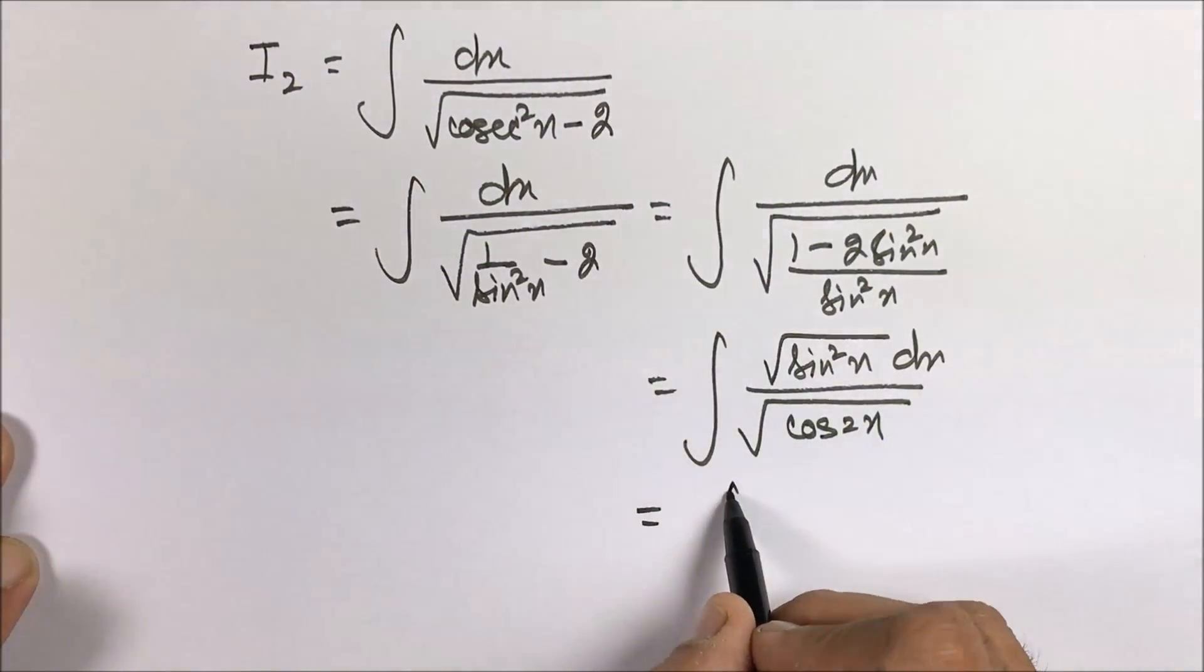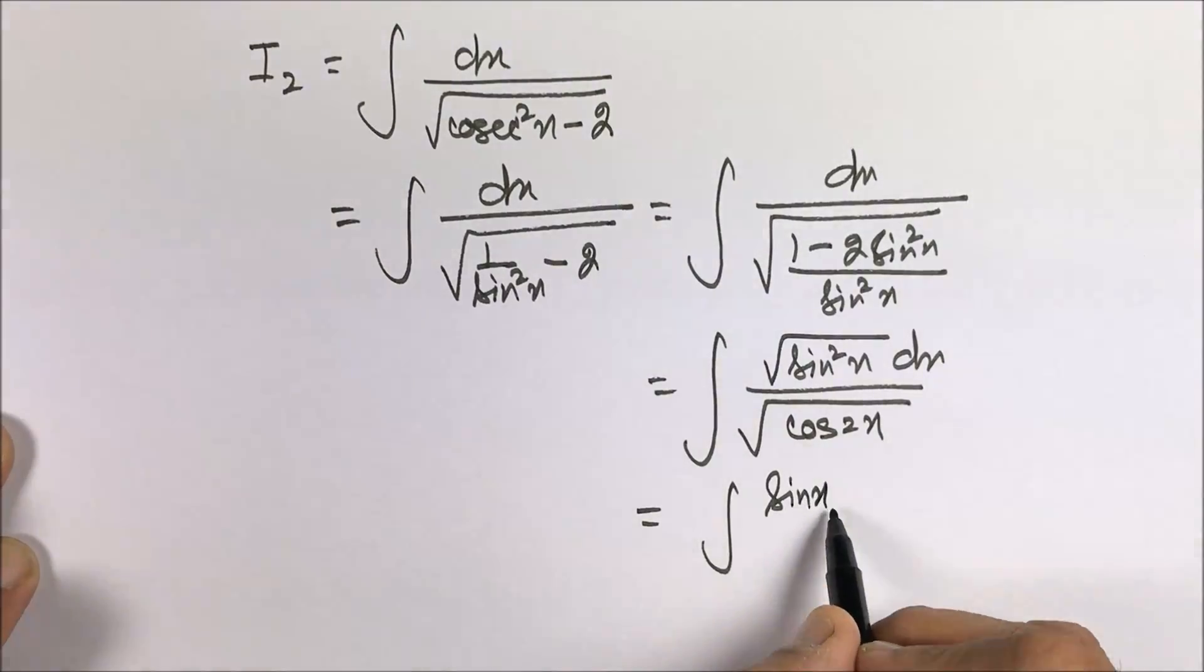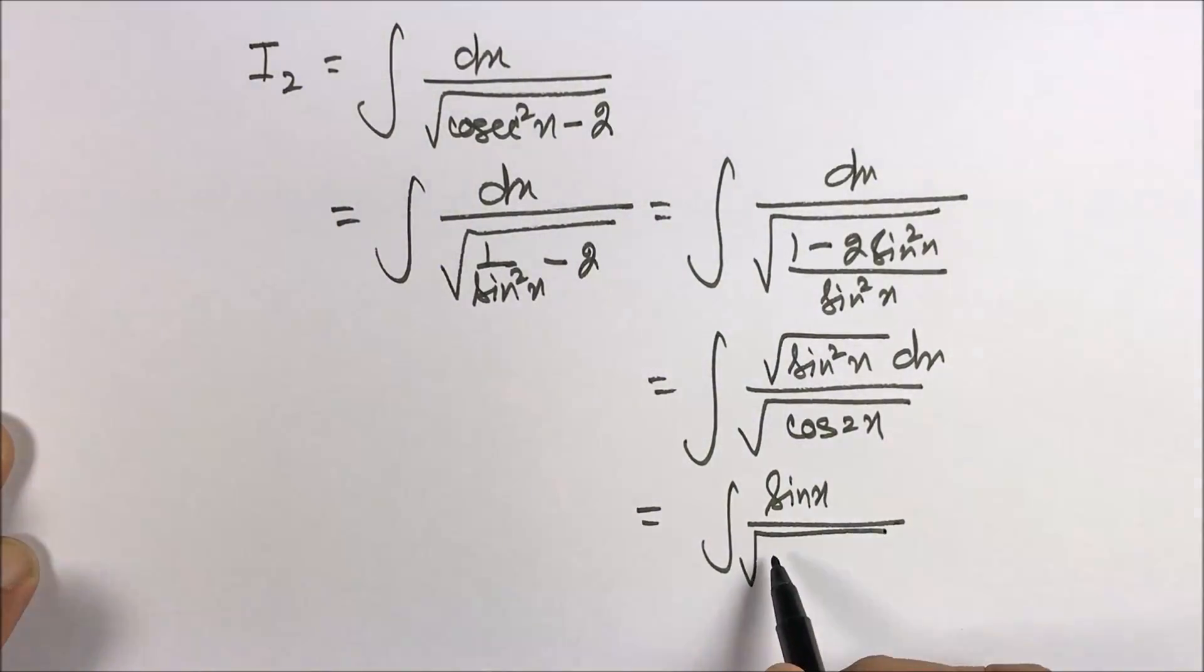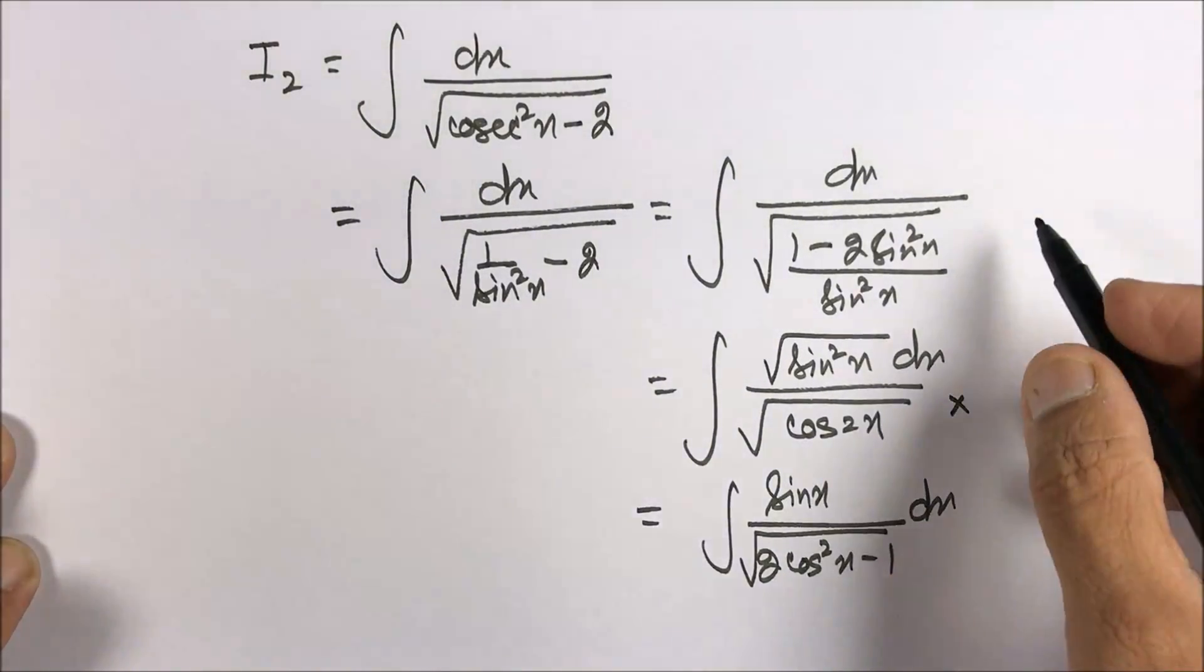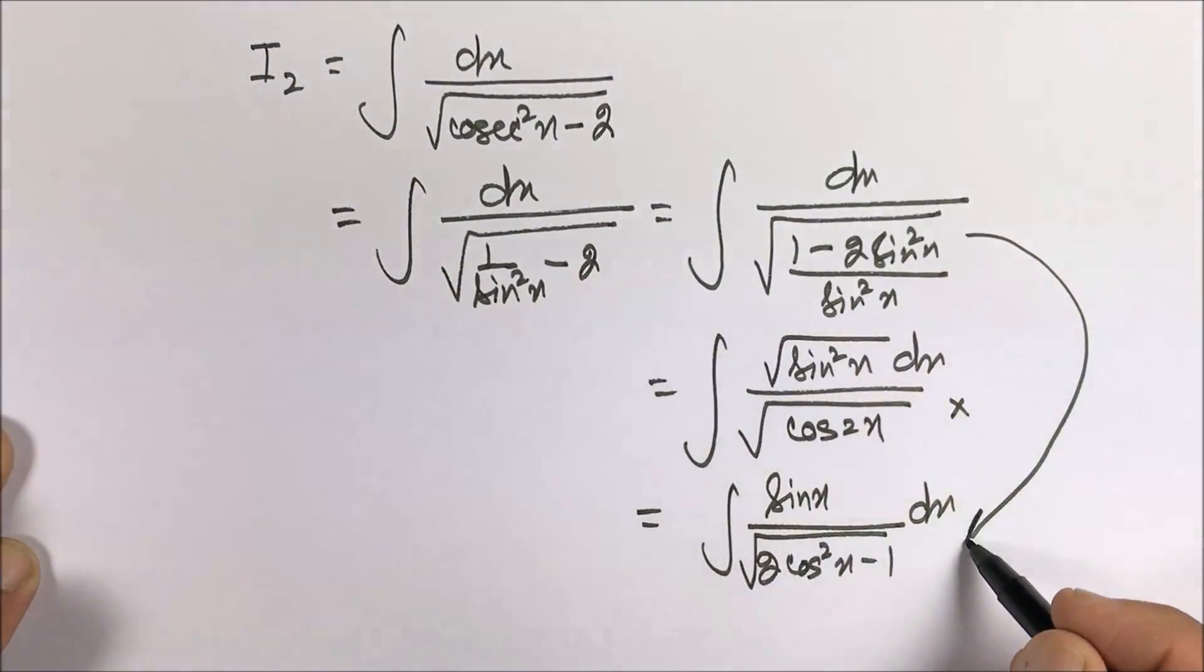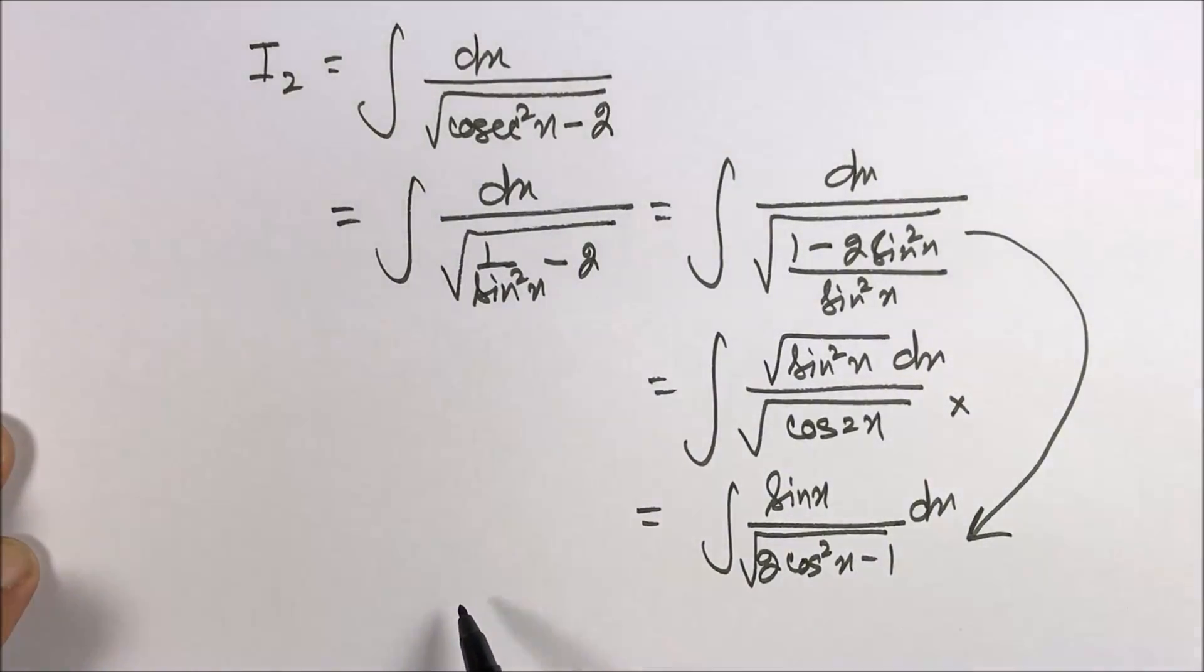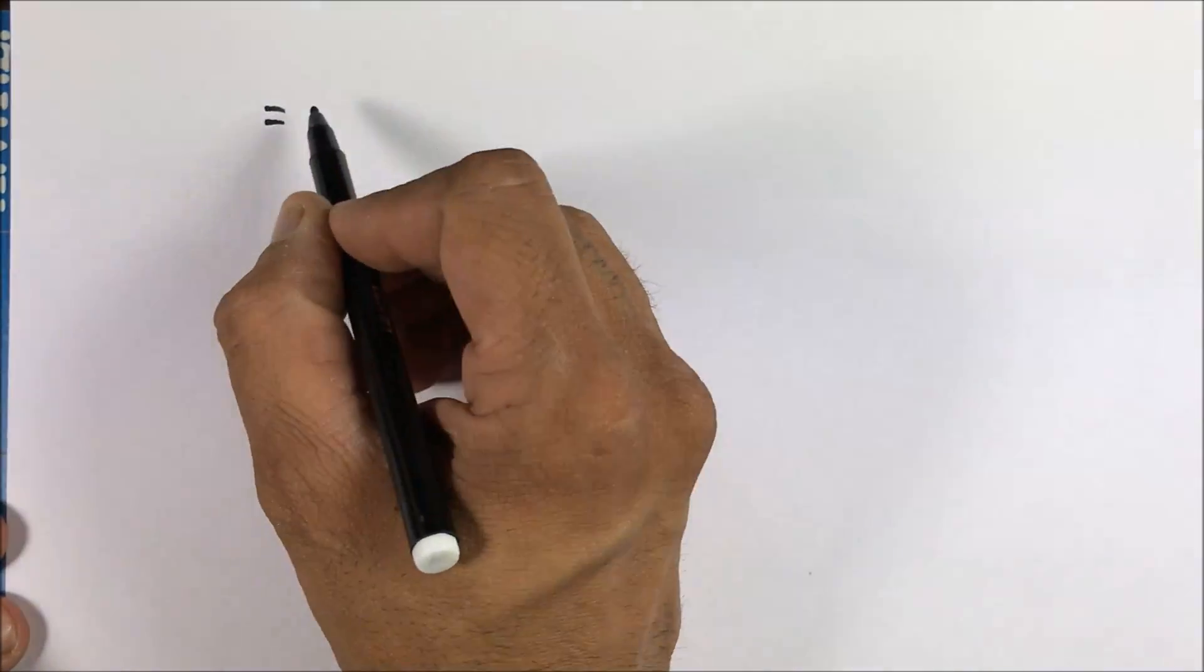And we will be converting this cos 2x in sine form. Remember, you can skip this step and you can come directly to this step. And you can see that we can easily be putting cos x equals - don't put t because we have already substituted t - so I'm putting y.